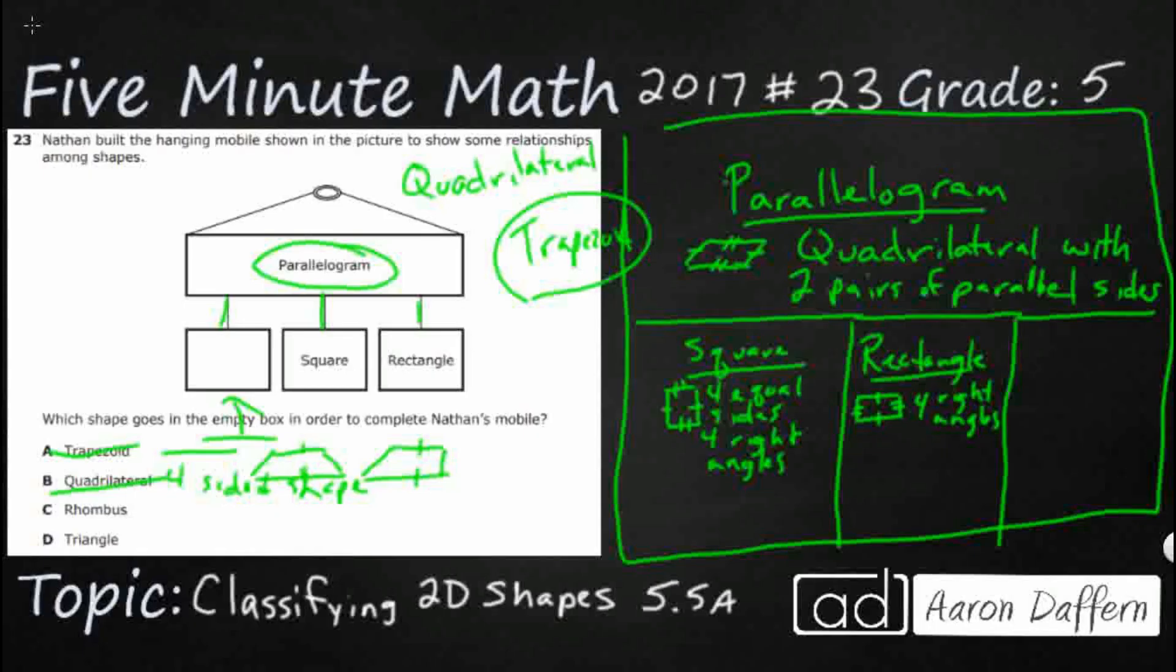And triangle, well, that's only a three-sided shape, so that's not going to work. So let's hope it's rhombus. Let's see if that fits. A rhombus, sometimes we like to think of it like a diamond. But it's really got two sets of parallel sides. So that's what we're looking for. And it's got four equal sides. That's what kind of makes it special. It's a special type of parallelogram. So it fits, and our answer here is C.